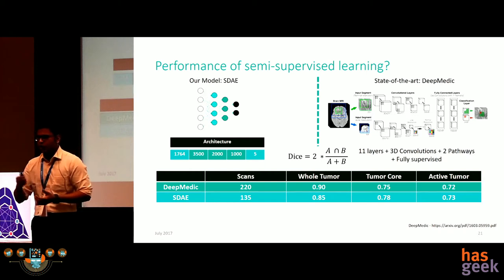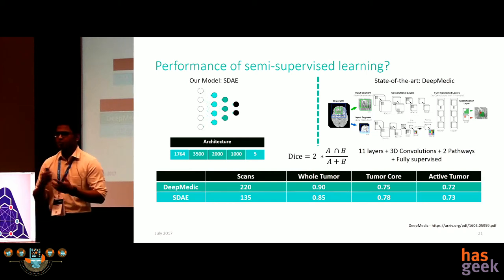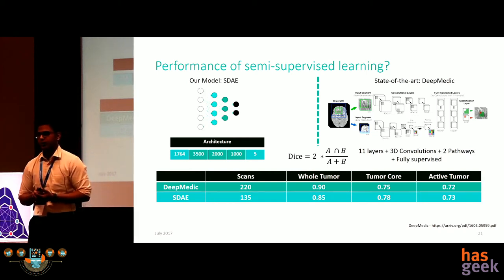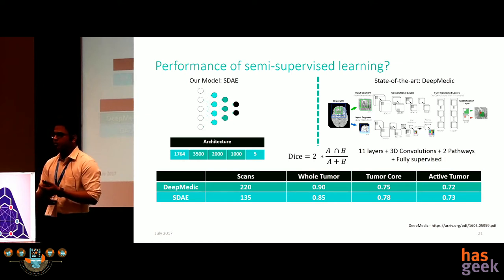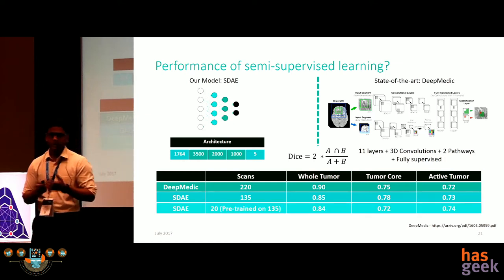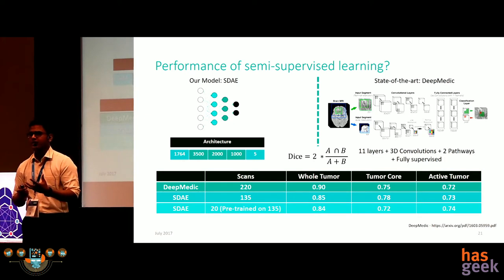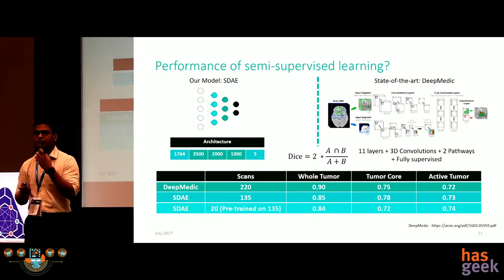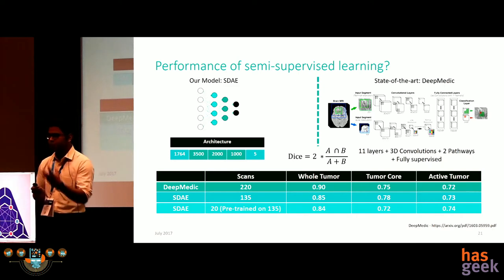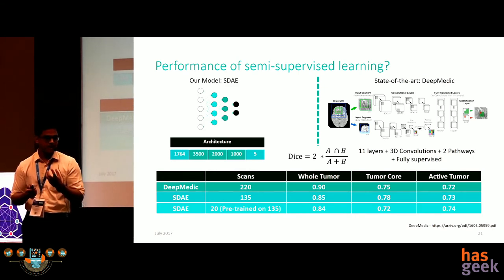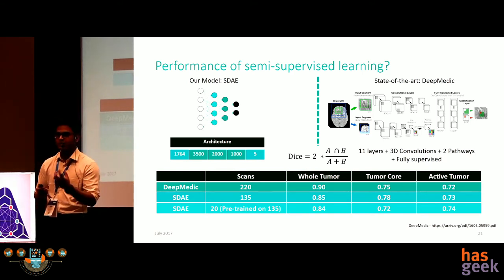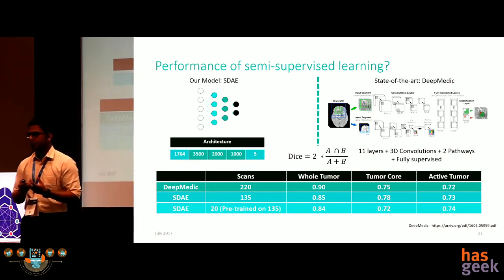To strongly evaluate the semi-supervised setting, we went aggressive on the second experiment. Instead of fine-tuning on 135 scans, we pre-trained on 135 scans and fine-tuned on just 20 annotated scans — and our active tumor DICE was still better than the state of the art's performance.